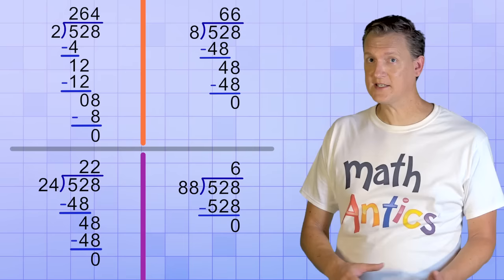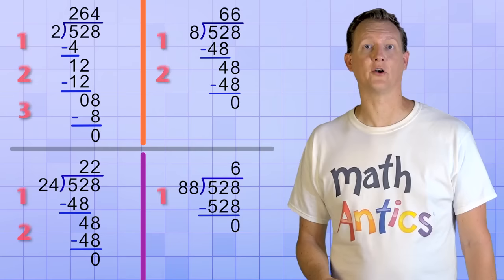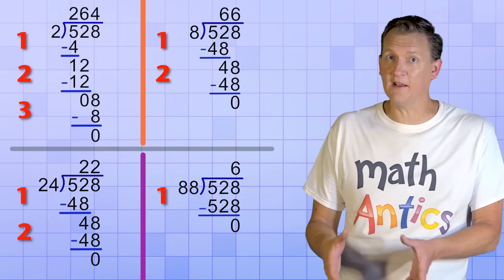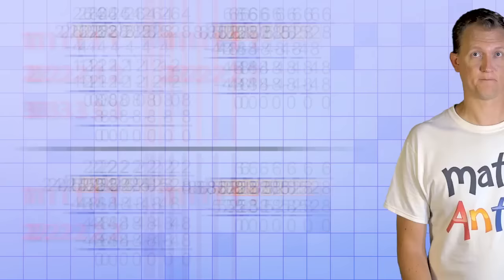So as you can see, even though the division procedure is basically the same in all these cases, the value of the divisor makes a big difference on our division steps. Whenever the divisor is bigger than the part of the dividend that we're trying to divide, it means that we need to group more digits and take bigger division steps.